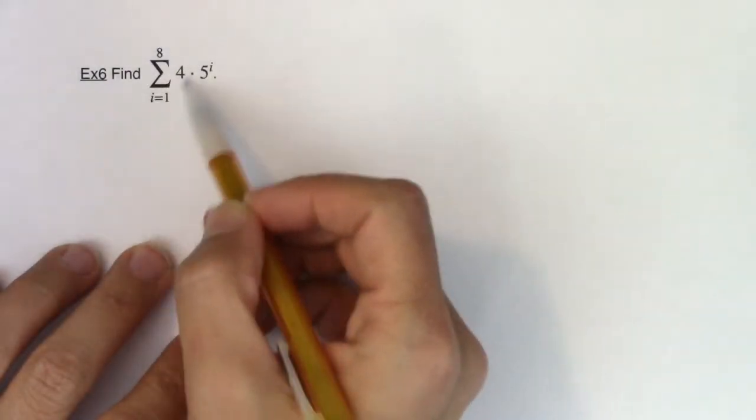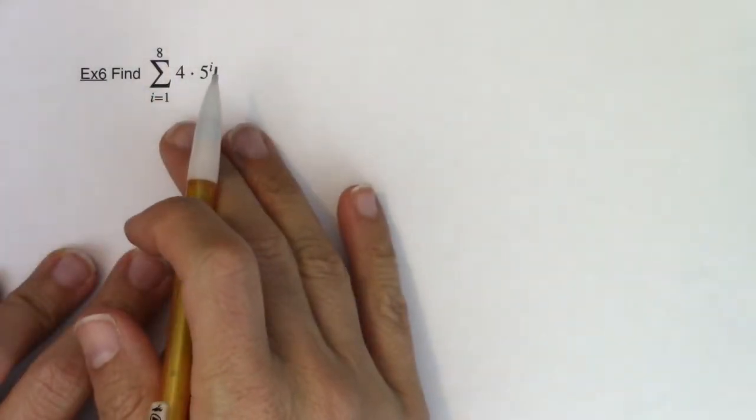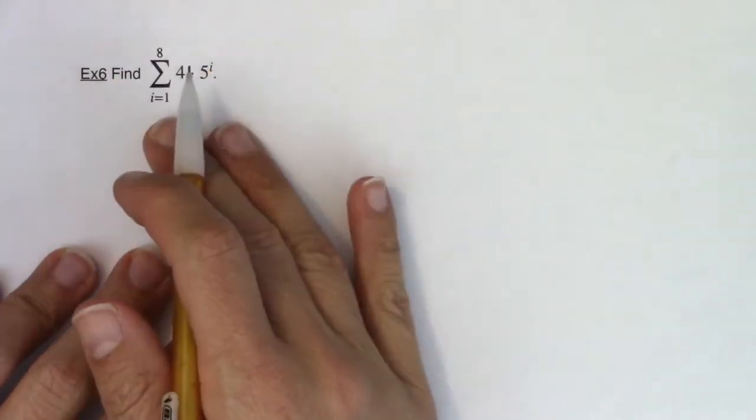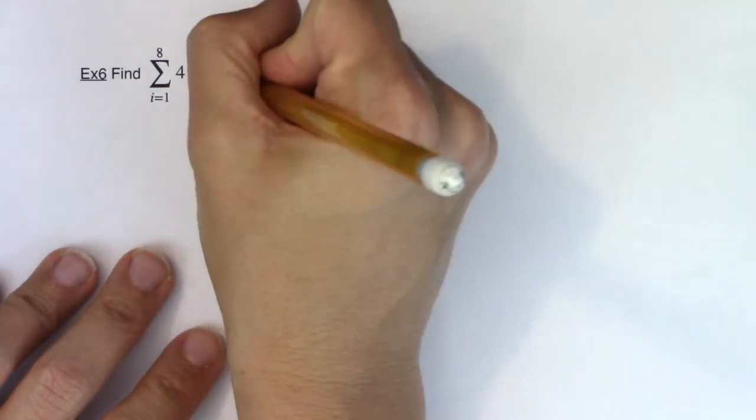Hey MAT31, welcome to example 6. So example 6, believe it or not, this sequence is geometric. It's just kind of hidden. It doesn't totally look geometric because I'm combining it with that summation notation that we talked about in the very first example. Let's work this as a summation notation problem, and I want you to see why this is a geometric sequence that I'm adding.